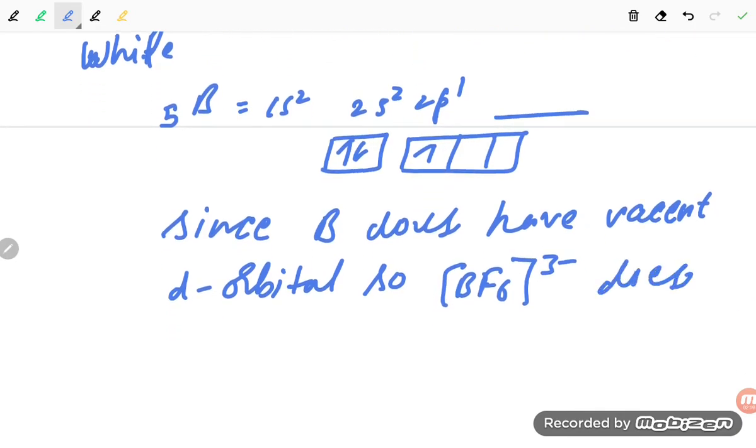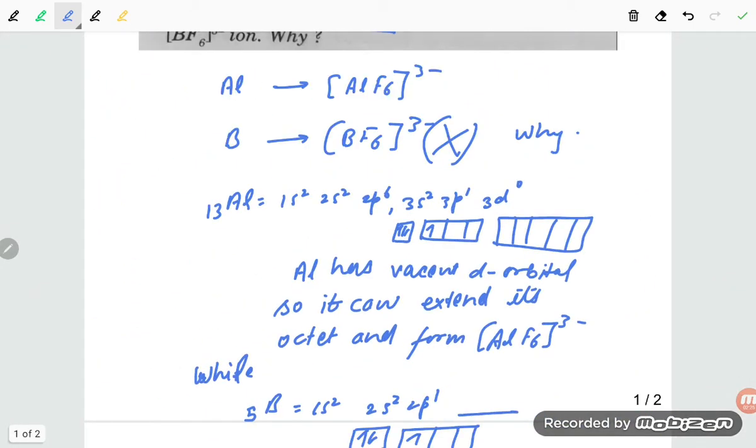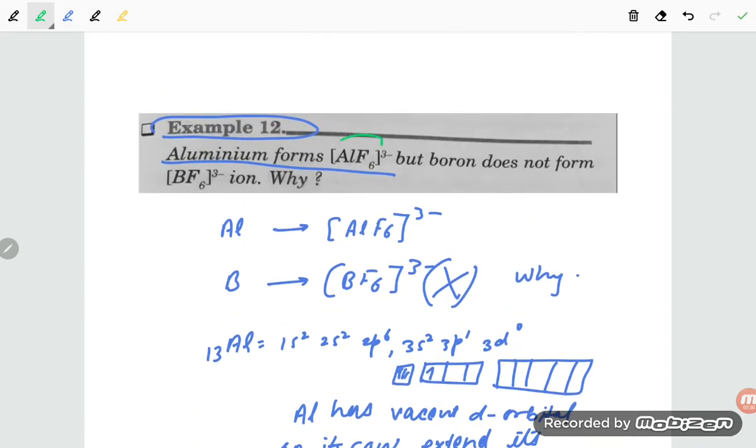So this is our required answer. [AlF6]³⁻ forms but [BF6]³⁻ does not form because aluminum has d-orbitals so it can extend its valency, but boron has no d-orbital so this is not possible.